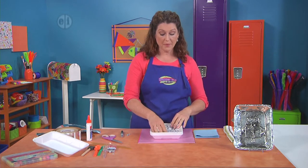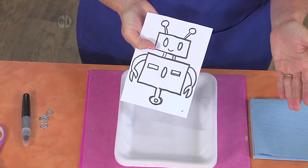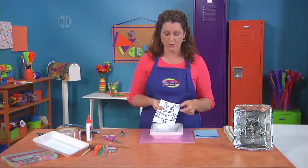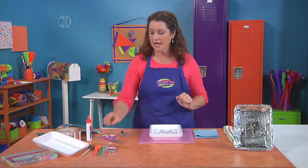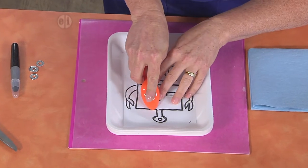So we're gonna start off by printing out this cute little robot. You'll find him on our website or feel free to draw your own. But what we're gonna do is just place him in the tray and use the back of a spoon to indent the pattern.